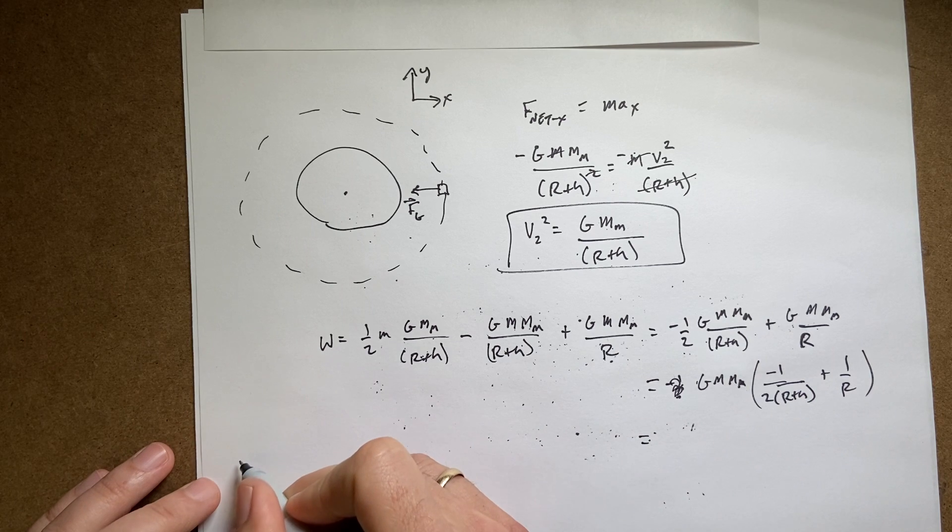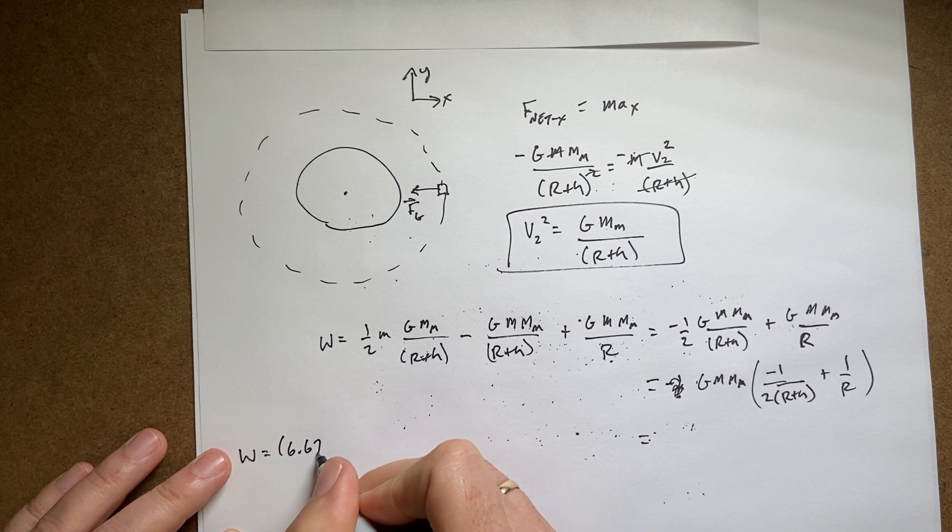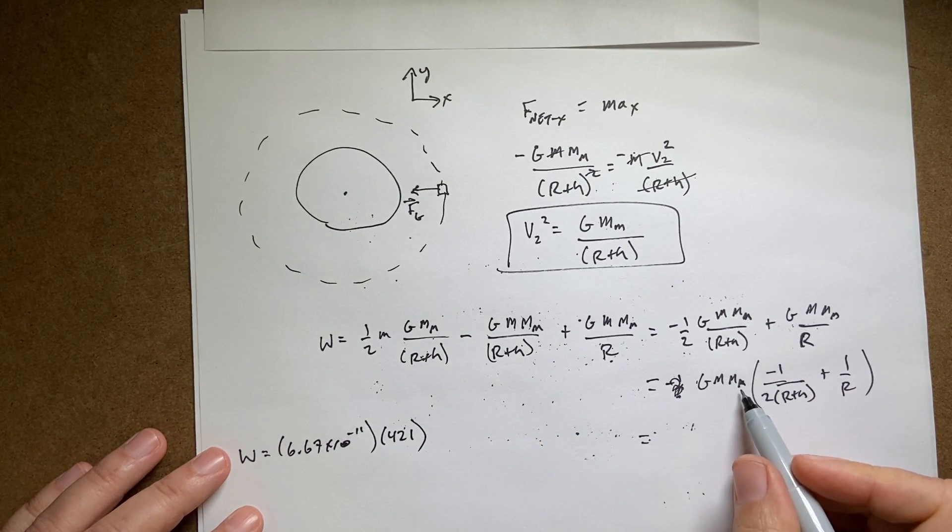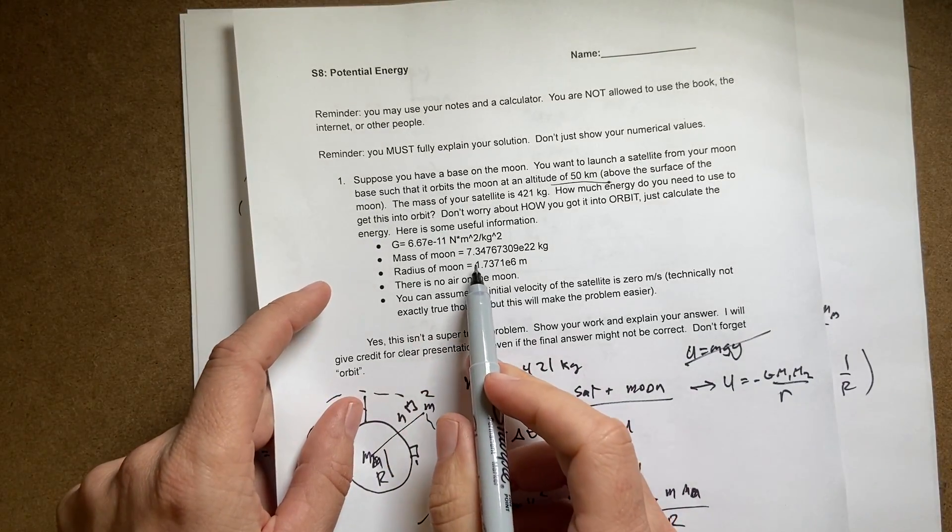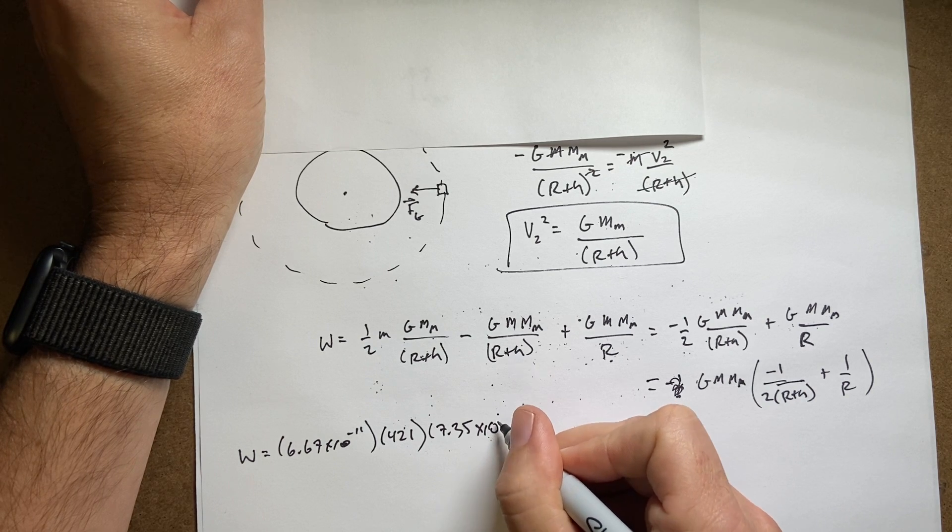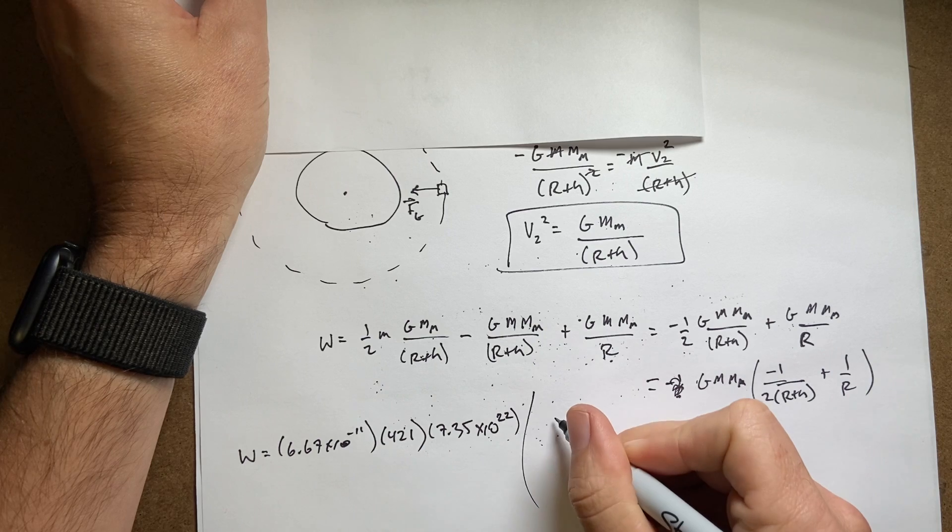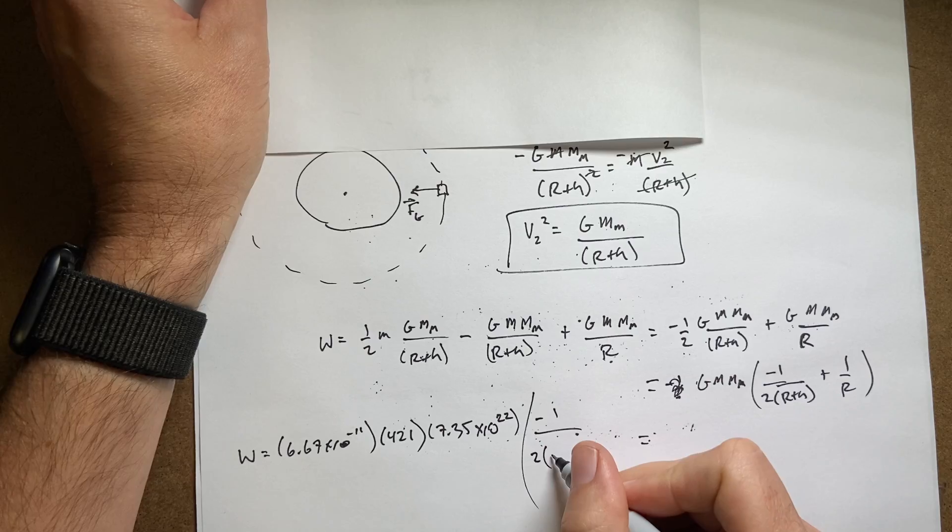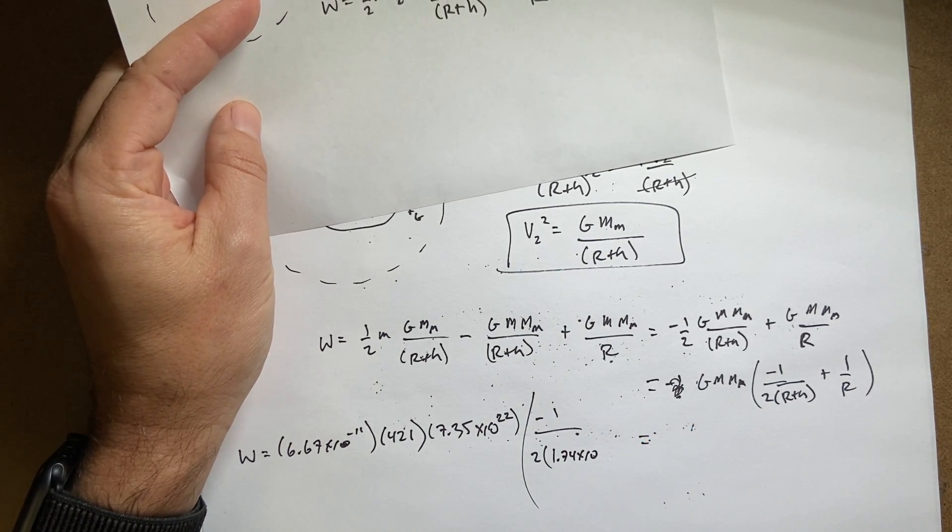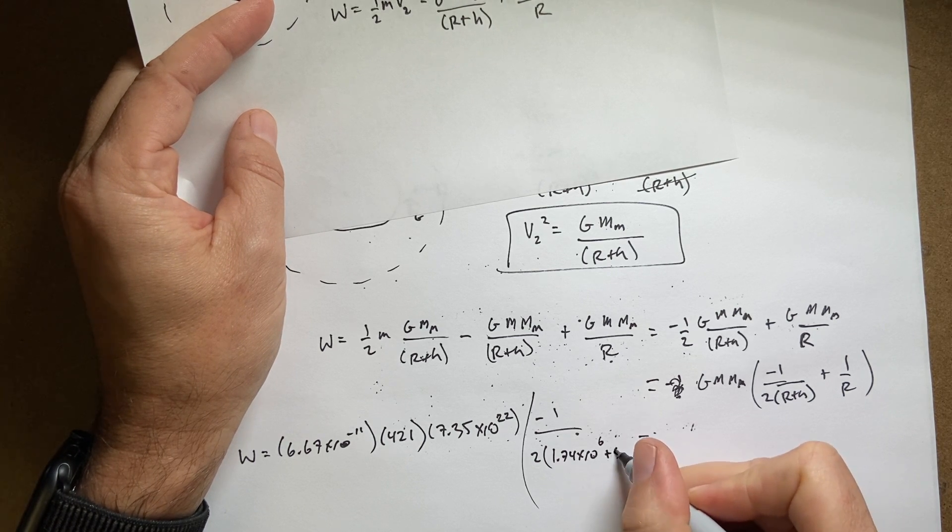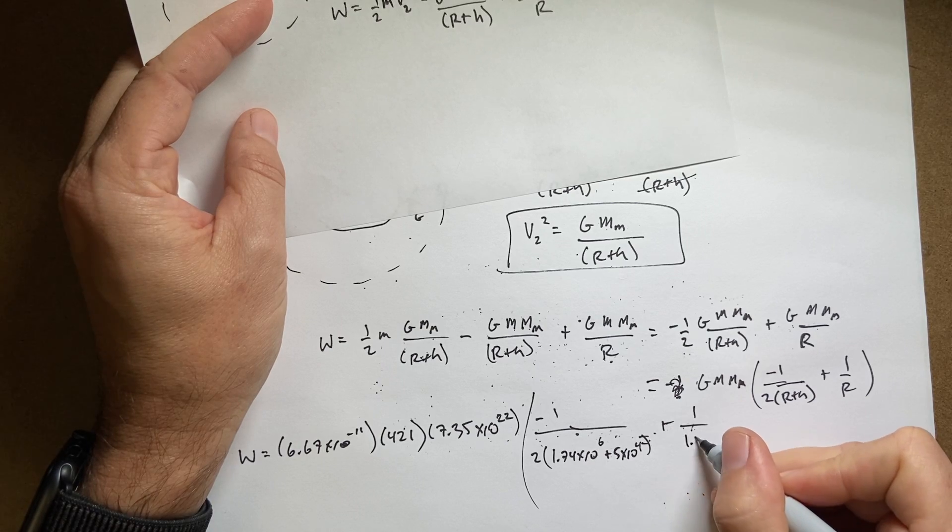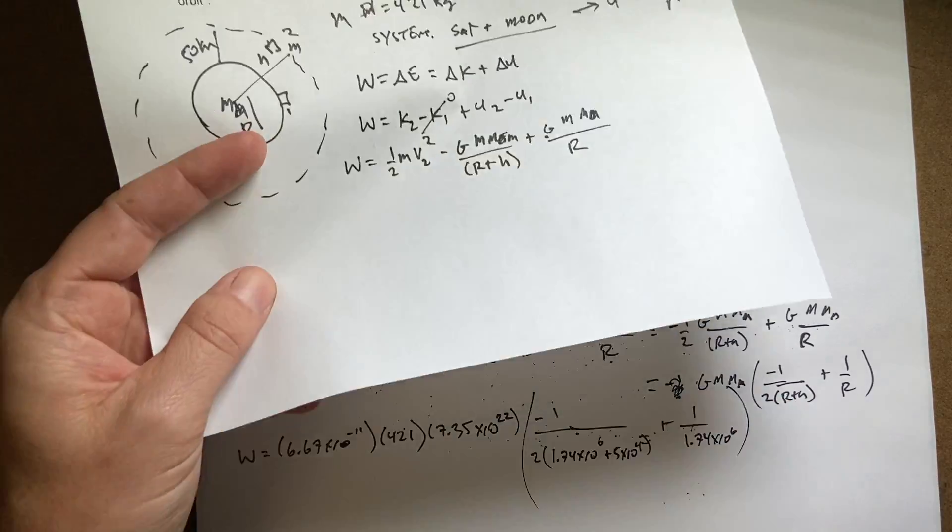So now let's put in all our values. Work equals g, 6.67 times 10 to the negative 11th. Mass of the satellite is 421. I'm leaving off my units because I'm lazy. Mass of the moon, 7.35 times 10 to the 22nd. Now I need negative one over two times this distance which is going to be the radius of the moon, 1.74 times 10 to the 6th plus 50 kilometers which is plus 5 times 10 to the 4th. Plus one over the same thing which is going to be the radius of the moon, 1.74 times 10 to the 6th.